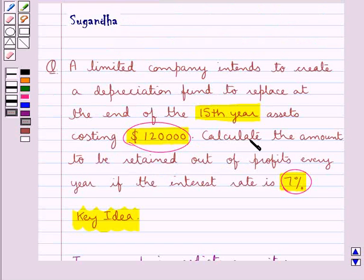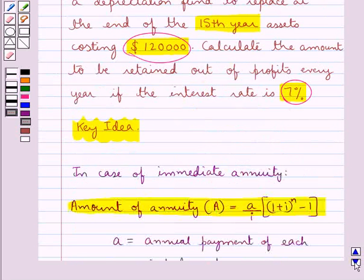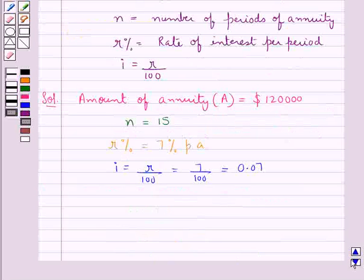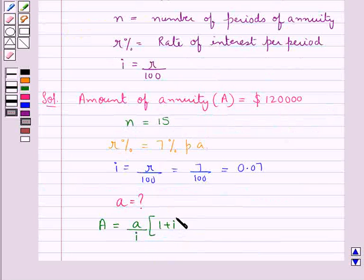Since we are supposed to find the amount to be retained out of profits every year, this means we have to find out small a which is the annual payment of each installment. Now we will use the formula capital A is equal to small a upon i into 1 plus i to the power of n minus 1.